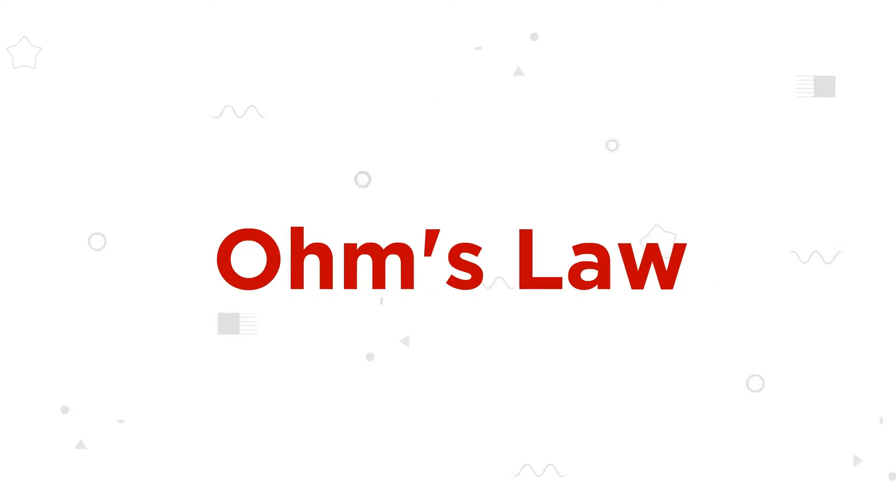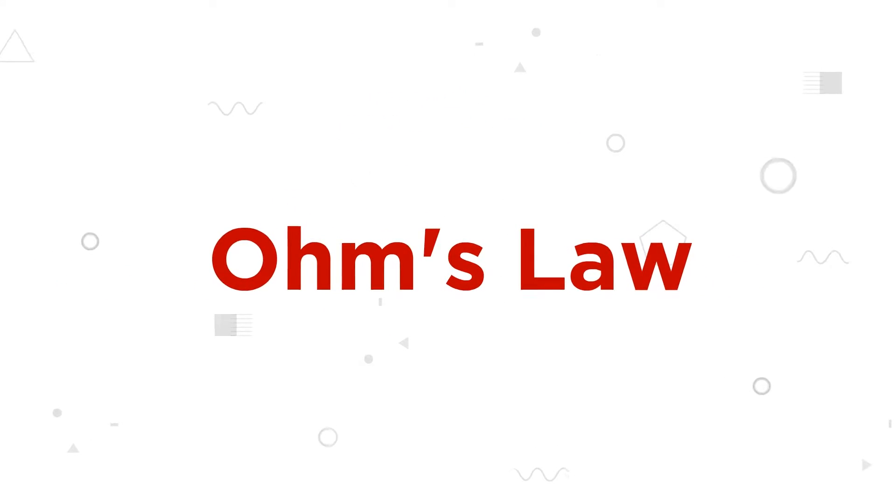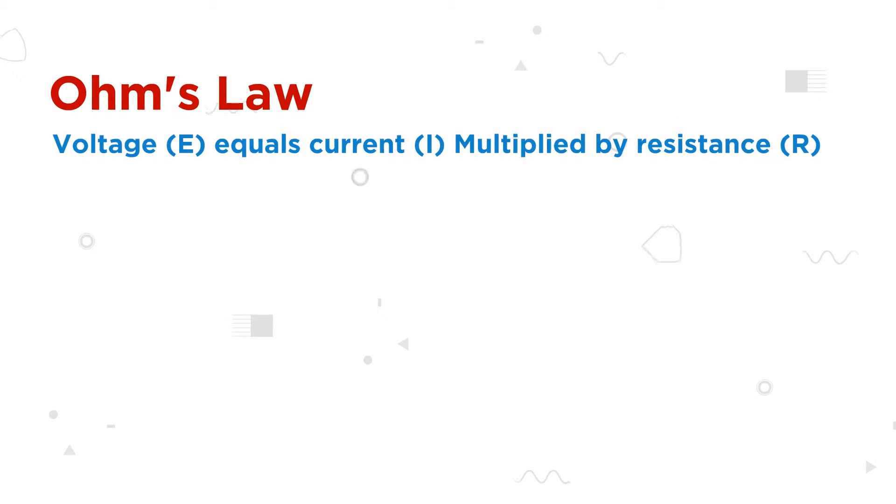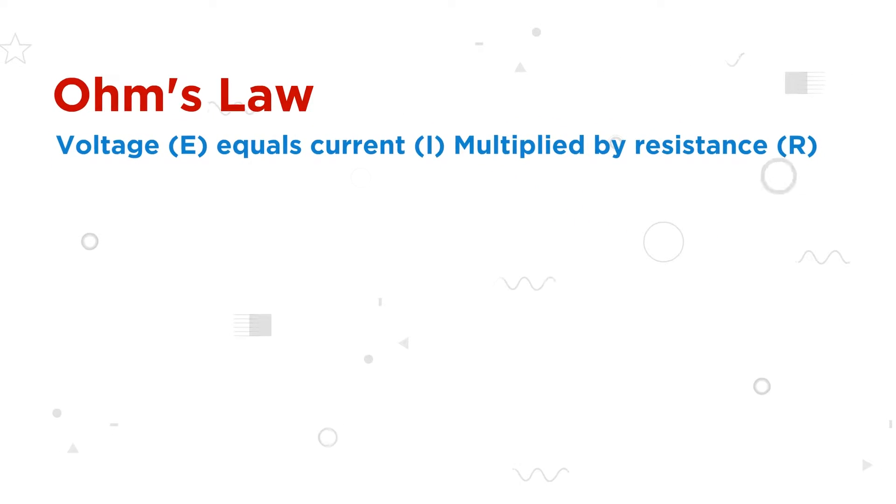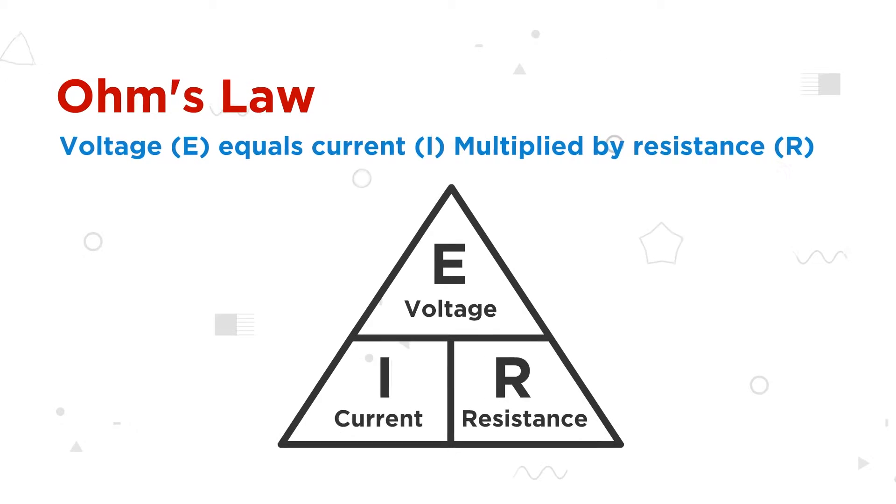Now let's learn Ohm's law, the most fundamental formula in electronics. Ohm's law states that voltage equals current multiplied by resistance. Using this triangle, we can calculate for voltage, current, or resistance.